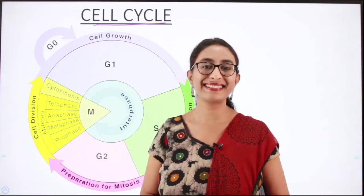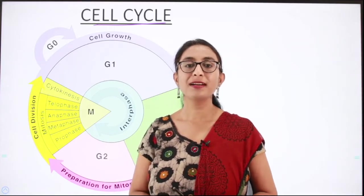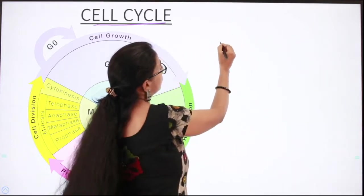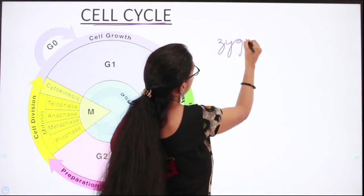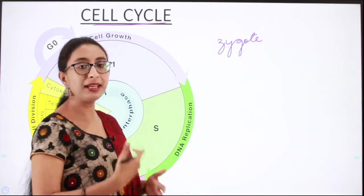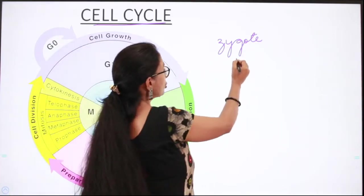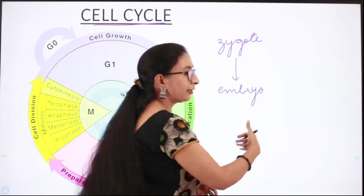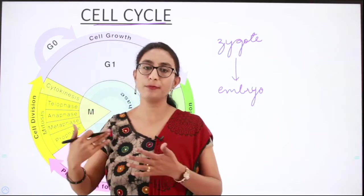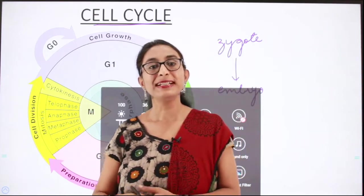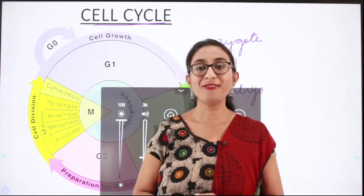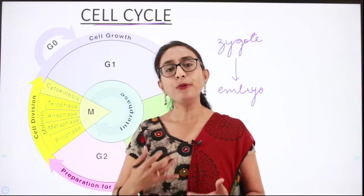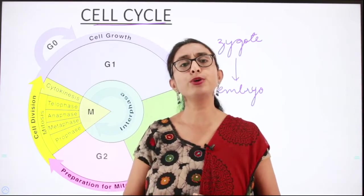It is because of these characteristics of cell growth and cell division that a single cell is capable of giving rise to a huge organism composed of several cells. Take the example of human beings — a sperm fertilizes the ovum to give rise to a single cell called the zygote. The zygote undergoes repeated cell division leading to the formation of an embryo, which further undergoes division giving rise to a fetus, baby, and so on.